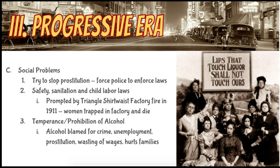The doors would only open inward, so when the fire struck and people were rushing through, they would crowd the door and not be able to open it. The entryway allowed only one person to pass through at a time so bags could be checked to prevent theft of garments. There were no proper fire escapes. The long story short: many women got stuck in the Triangle Shirtwaist Factory and burned to death. This really caused people to sit up and take notice, because young girls were now dying on a large scale and needlessly.